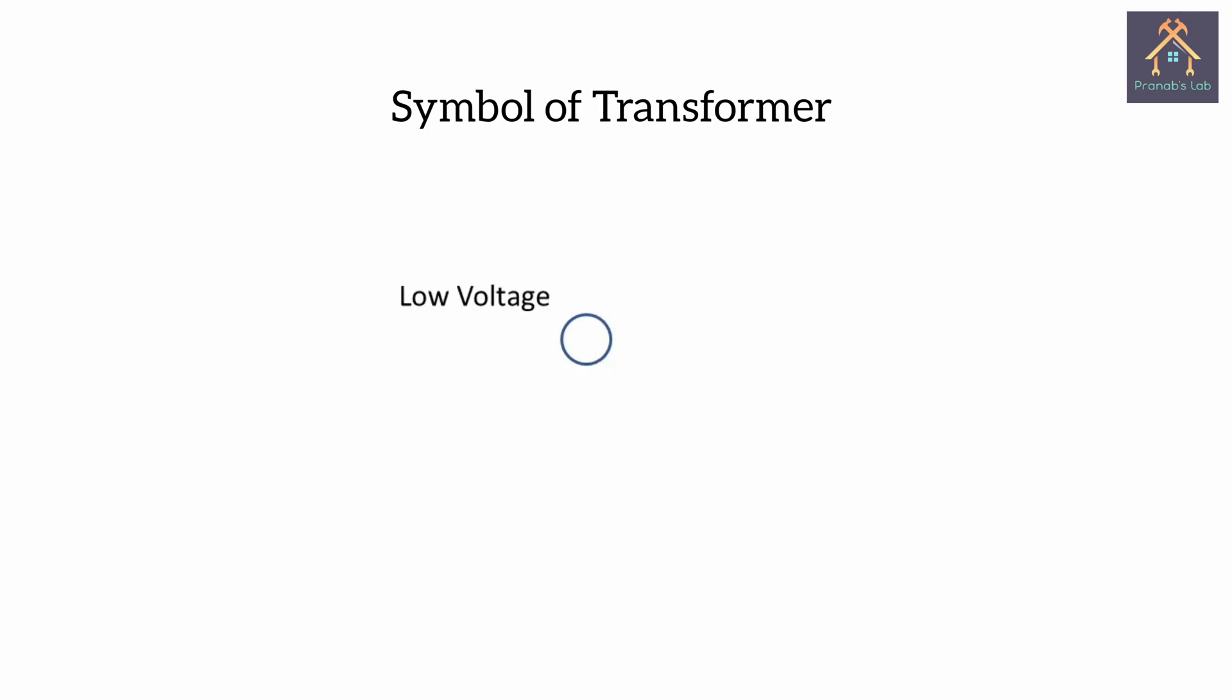This is the symbol of a transformer. The small circle indicates the low voltage and the large circle indicates the high voltage of the transformer. If the direction of power is from low voltage to high voltage, it is called stepping up and if the power flow from high voltage to low voltage, it is called stepping down.